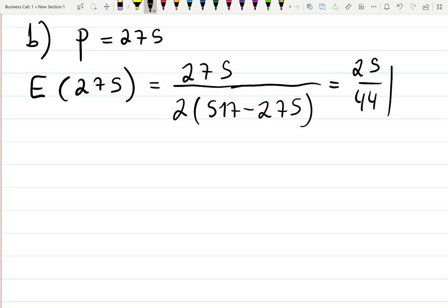The important part is to find out if this number is less than 1 or greater than 1. It is less than 1, so I will say E(275) is less than 1.